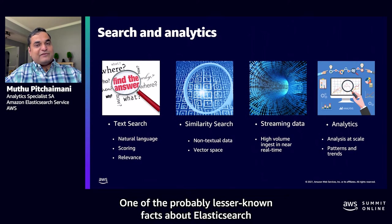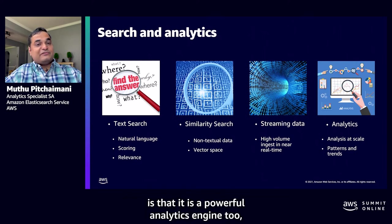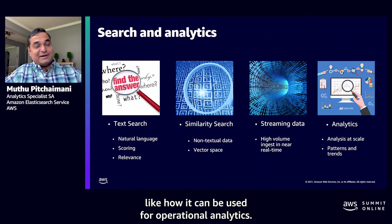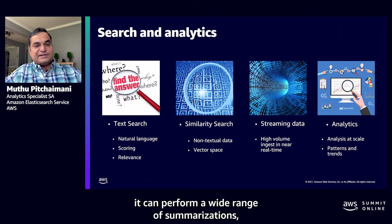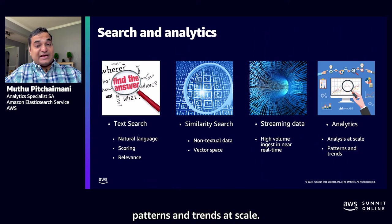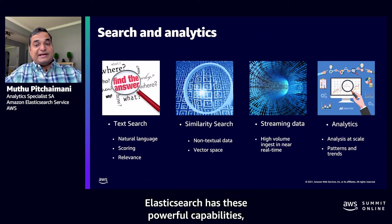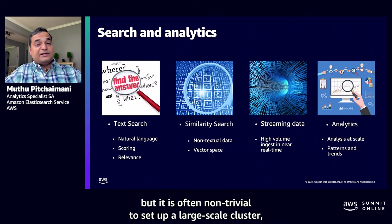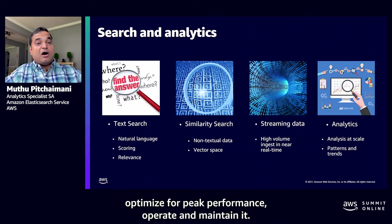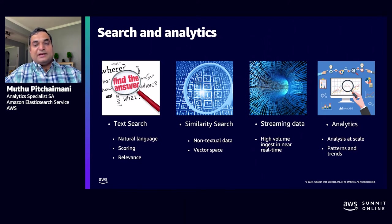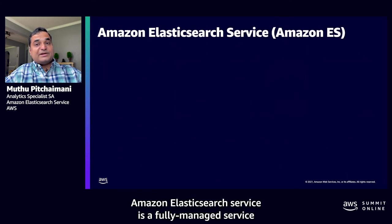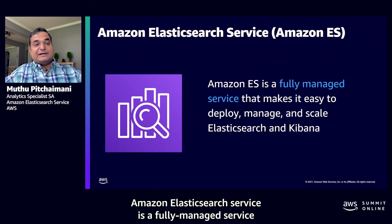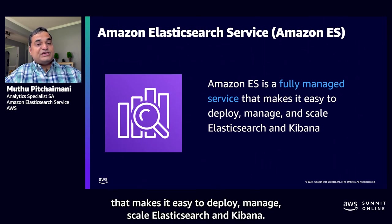A lesser-known fact is that Elasticsearch is also a powerful analytics engine — using what is called aggregation, it can perform a wide range of summarizations, patterns, and trend analysis at scale. Elasticsearch has these powerful capabilities, but it is often non-trivial to set up a large-scale cluster, optimize for peak performance, operate and maintain it. This is where managed offerings like Amazon Elasticsearch Service come in handy — a fully managed service that makes it easy to deploy, manage, and scale Elasticsearch and Kibana.